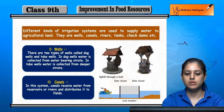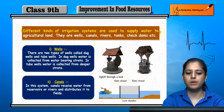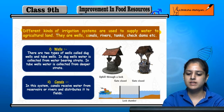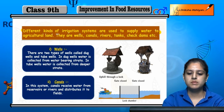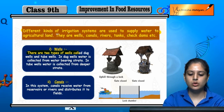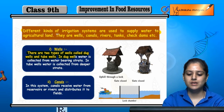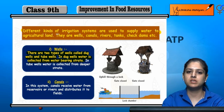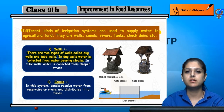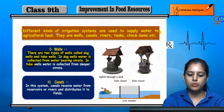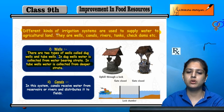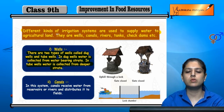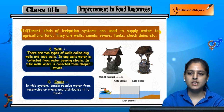Different kinds of irrigation systems are used to supply water to agricultural land. First, wells: there are two types — dug wells and tube wells. In dug wells, we collect water from the water-bearing strata. In tube wells, water is extracted from deeper strata, tapping groundwater from deep underground levels.